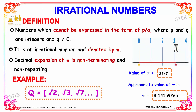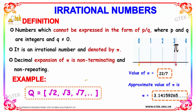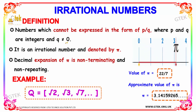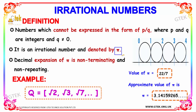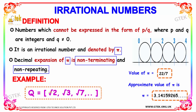Now let's move on to irrational numbers. Numbers which cannot be expressed in the form p by q — where p and q are integers and q is not equal to 0 — are irrational numbers, generally denoted by pi. The decimal expansion of an irrational number is non-terminating and non-repeating. Examples include root 2, root 3, root 7. The value of pi is approximately 22 divided by 7, or 3.14.